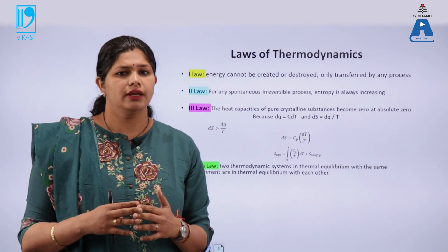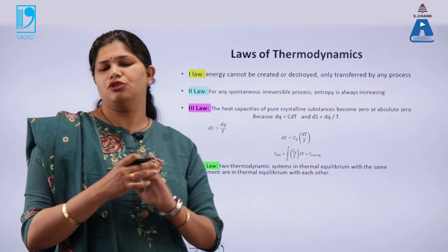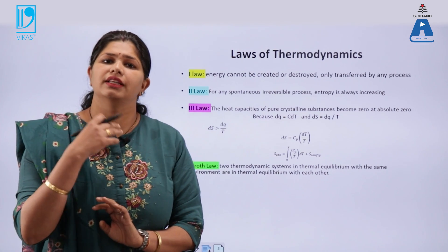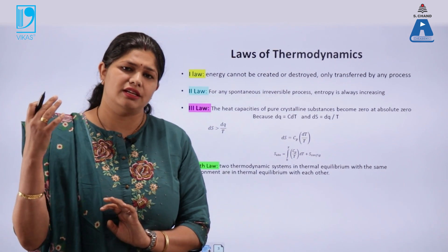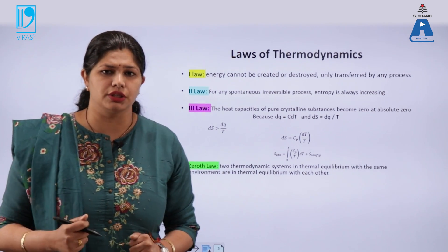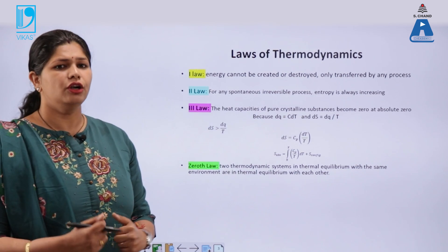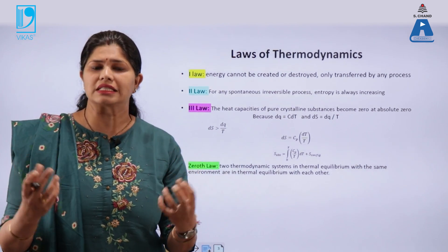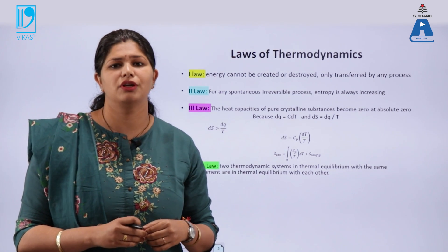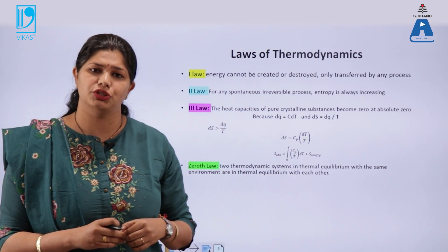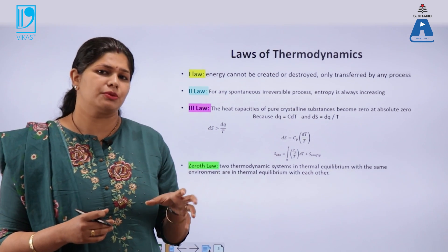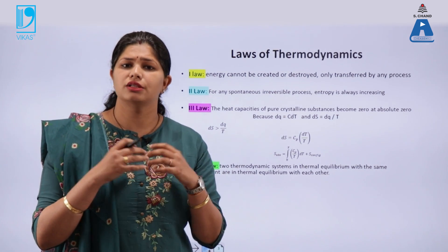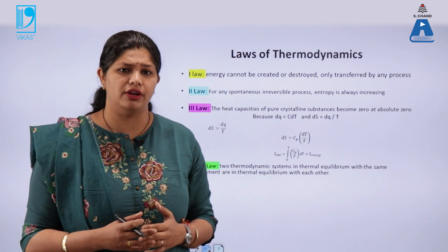The second law states that the entropy of the universe is always increasing — we will always observe the rise in entropy for a spontaneous reaction. The third law of thermodynamics states that for a pure crystalline substance at absolute zero temperature, the entropy of that substance is zero, meaning there is no randomness or disordered structure at zero Kelvin.